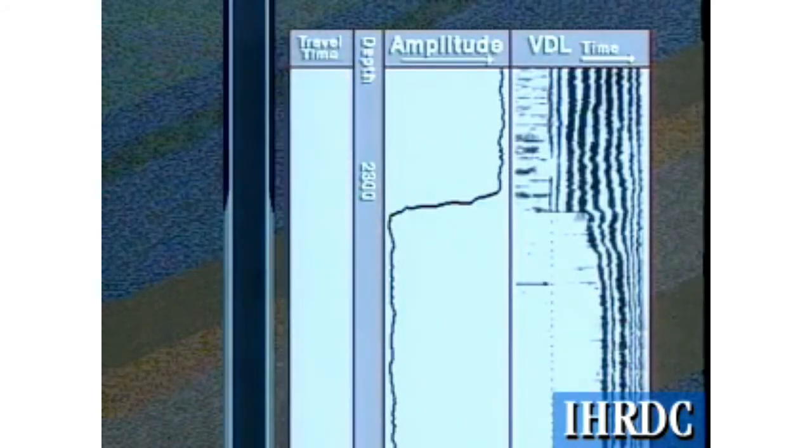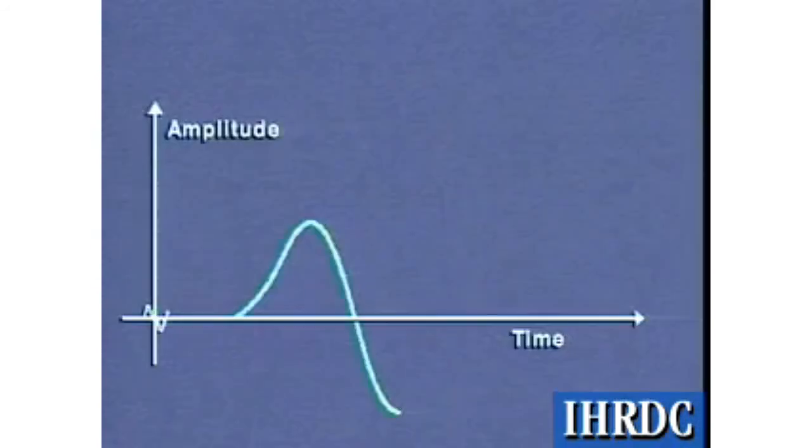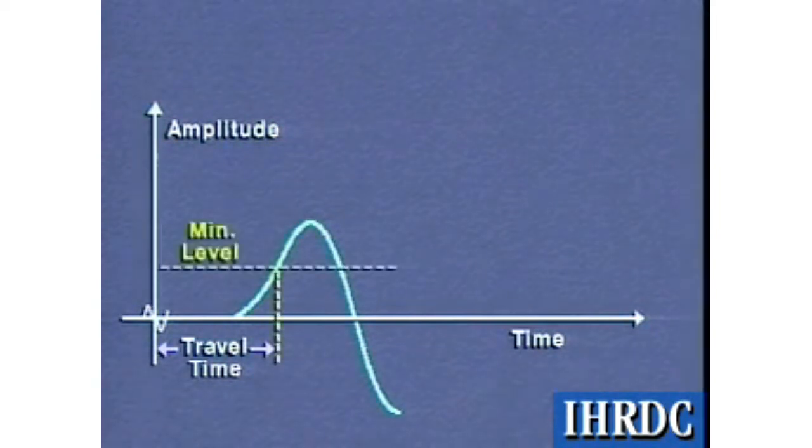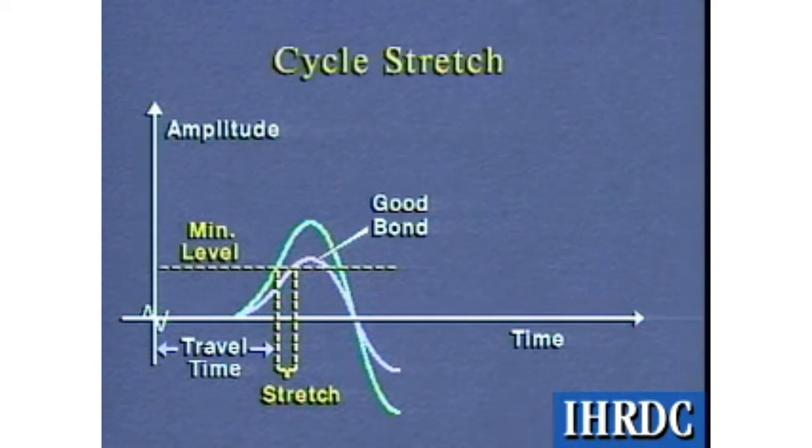The travel time curve is the primary quality control curve on a CBL. Travel time is measured from the initiation of the acoustic signal at the transmitter to the arrival of the first signal at the near receiver, which reaches a minimum amplitude level. When the signal is reduced, due to a good bond, the travel time signal stretches, since the minimum amplitude level is not reached until a later time. This is known as cycle stretch.